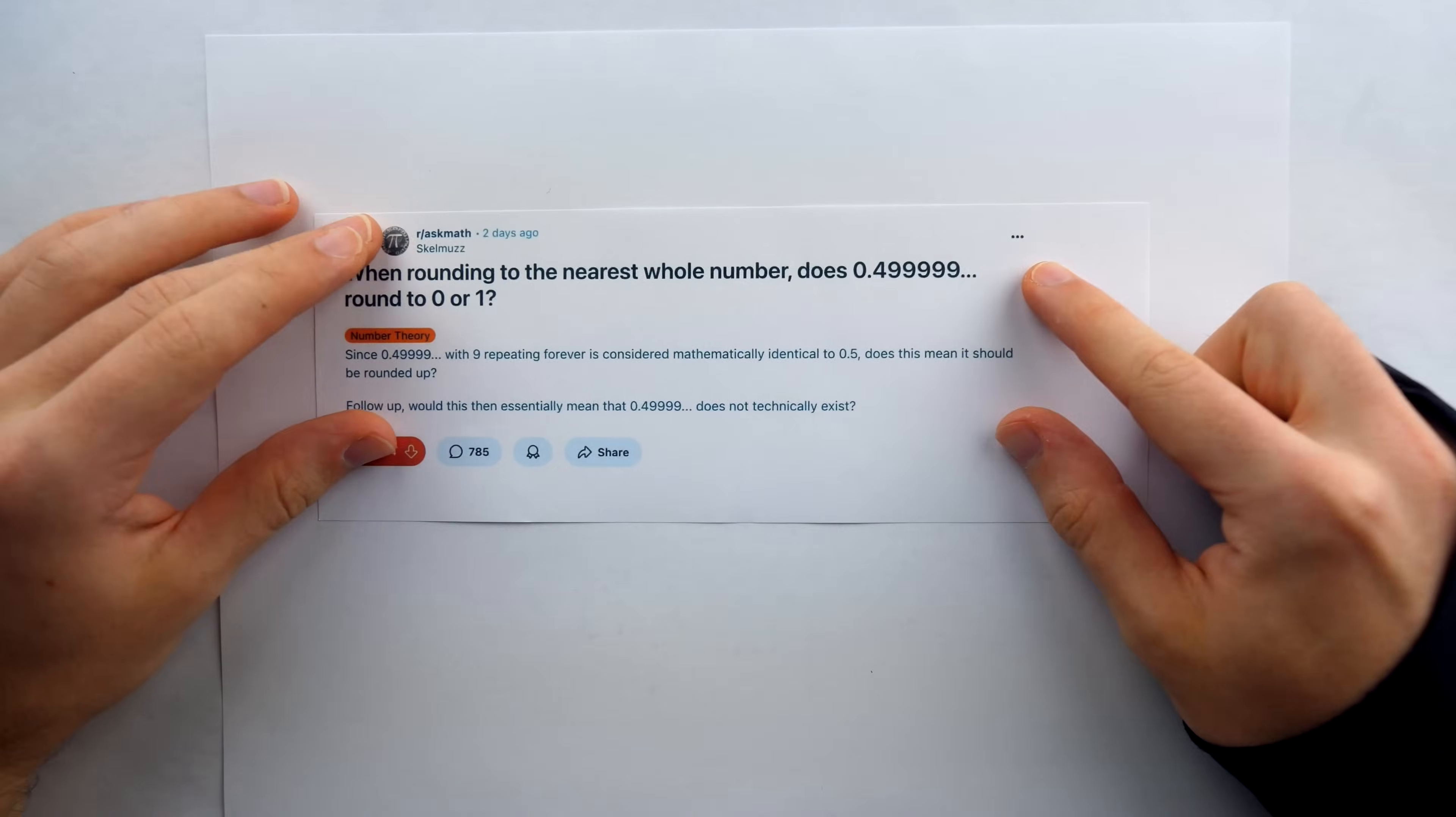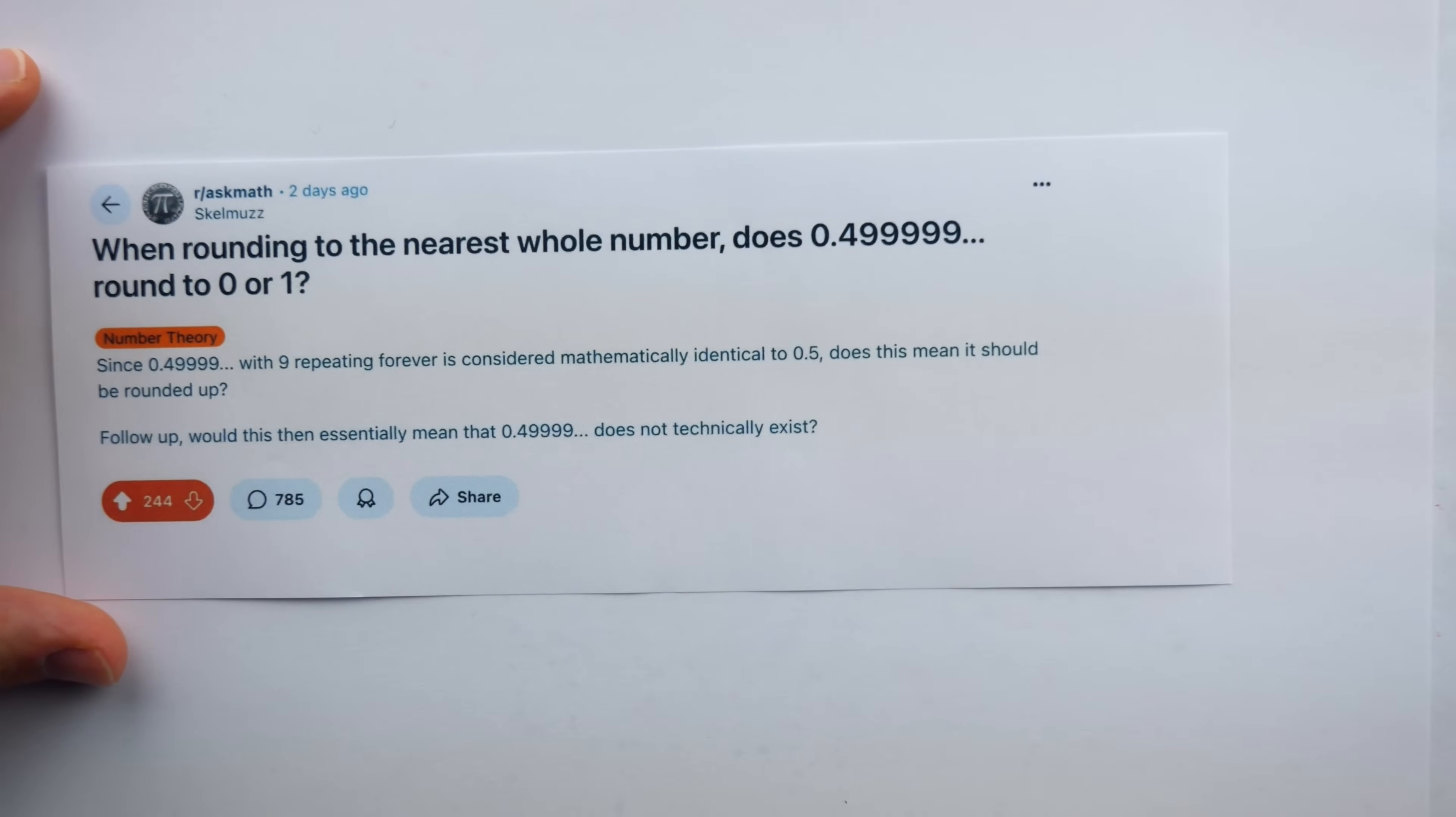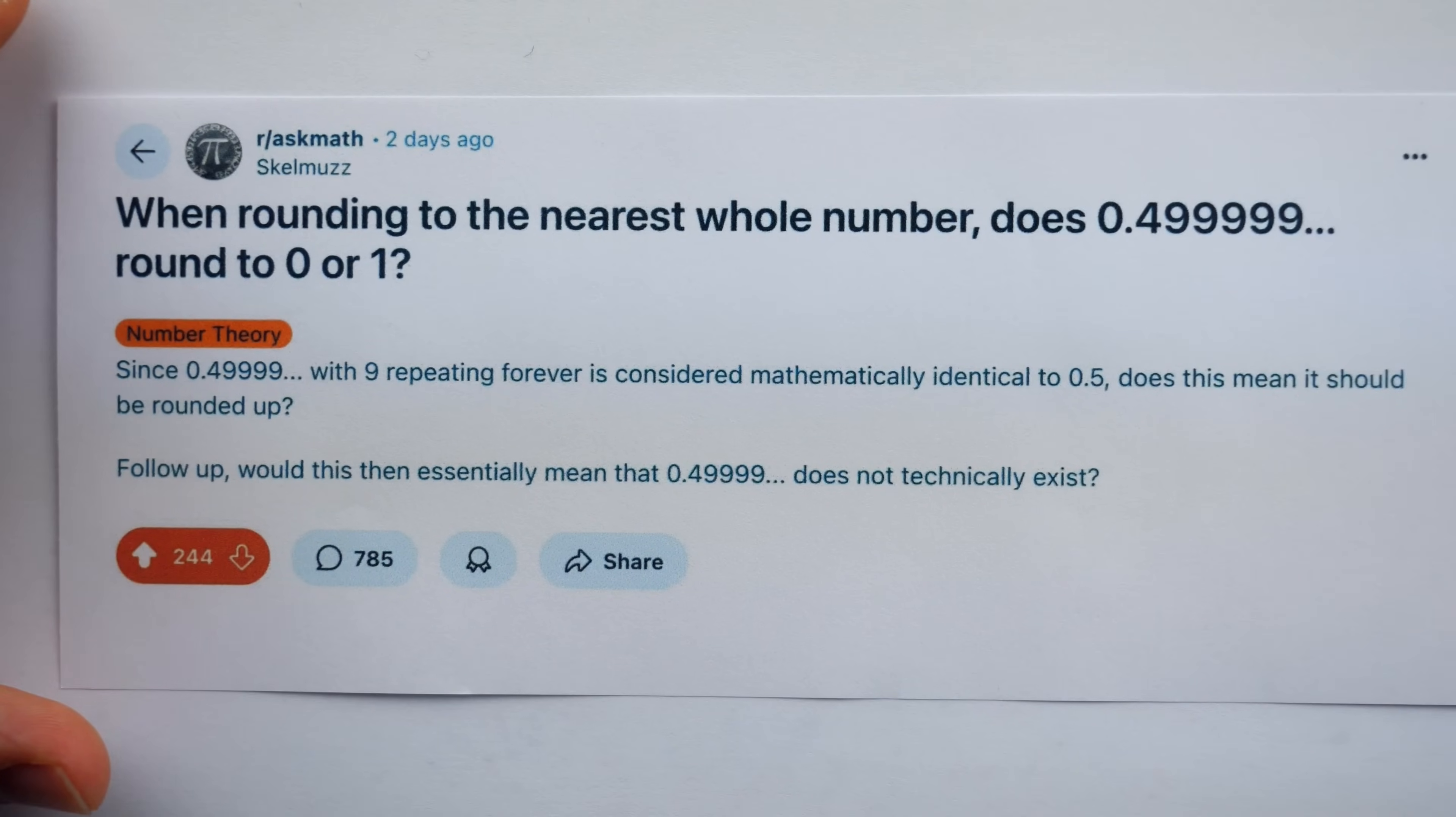When rounding to the nearest whole number, does 0.49999 repeating round to zero or one?